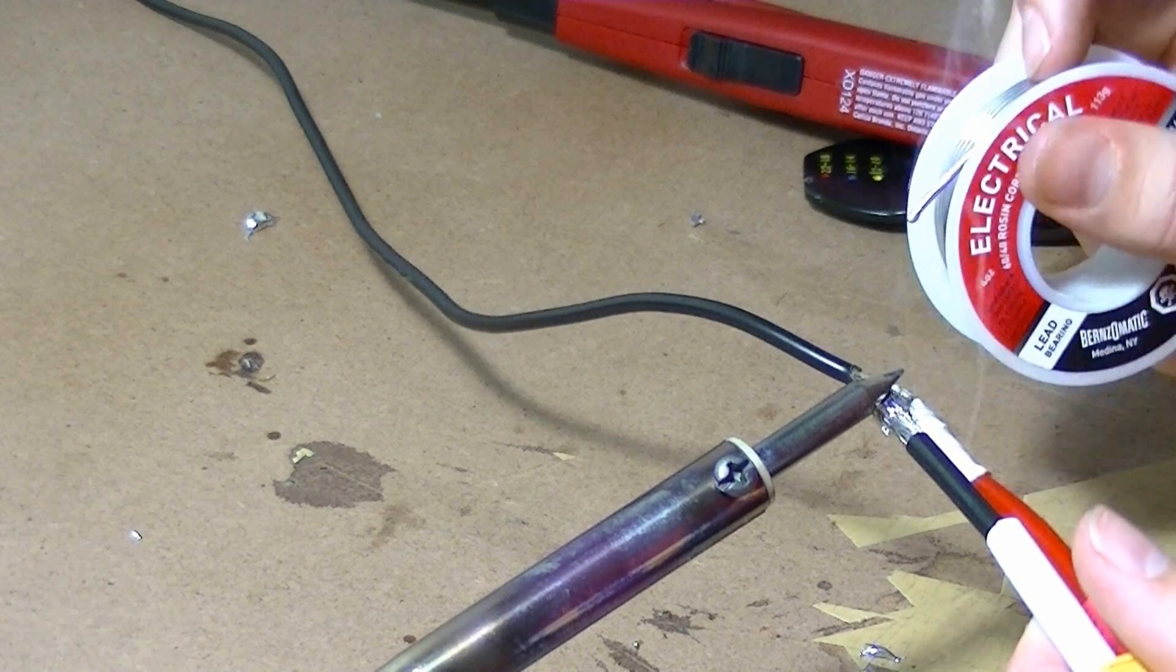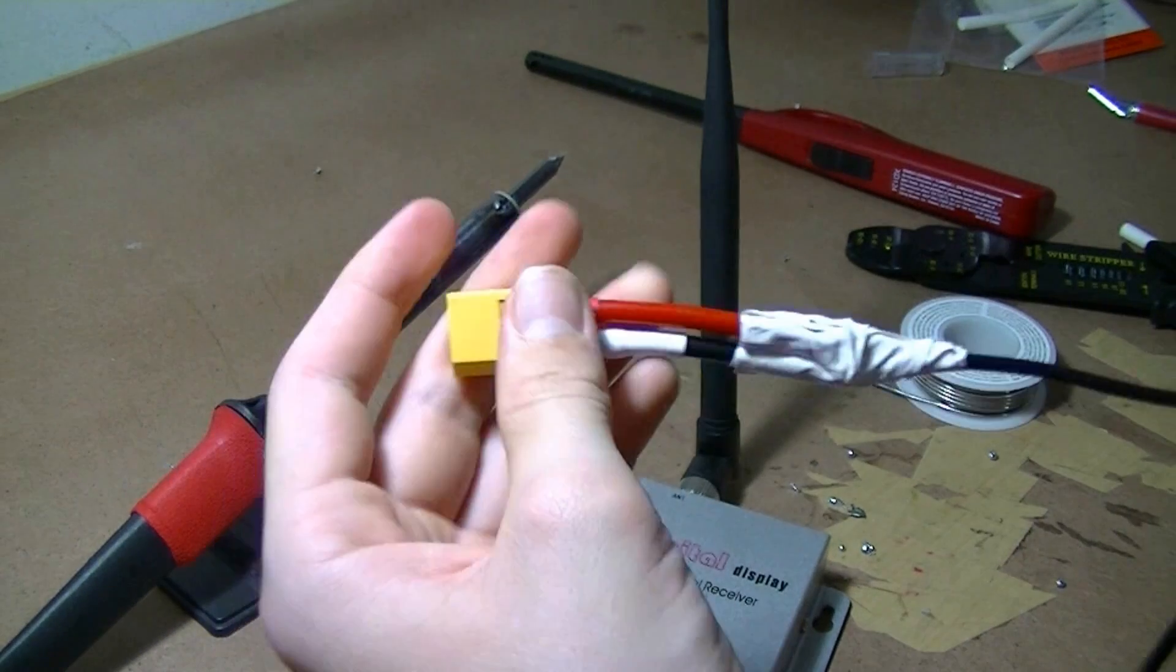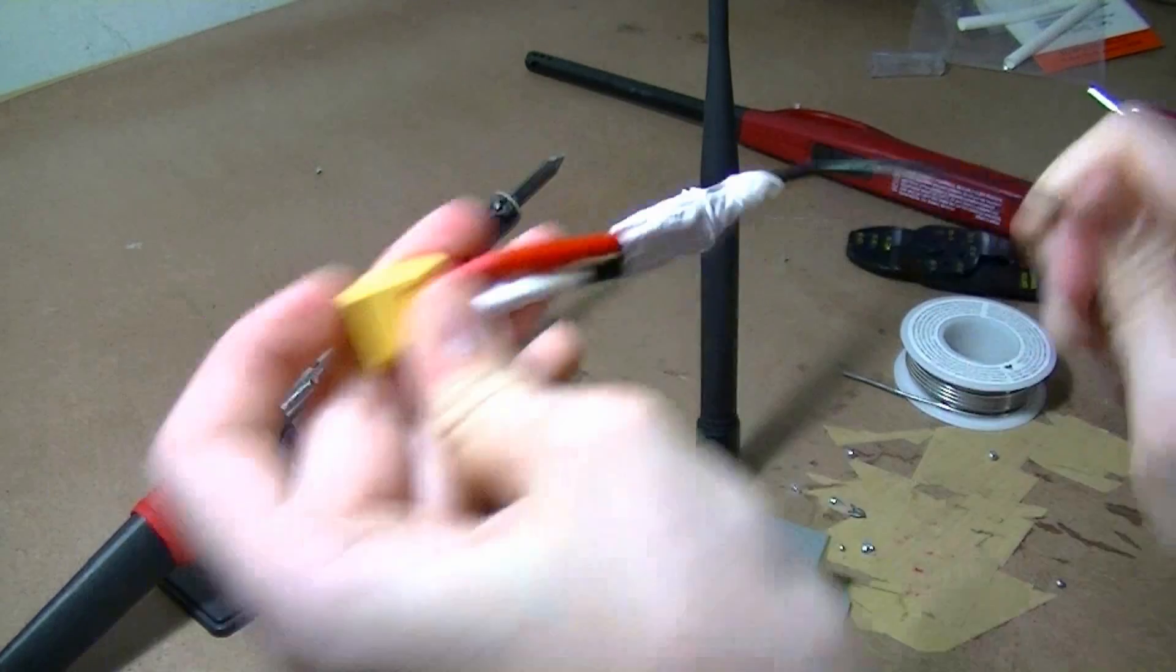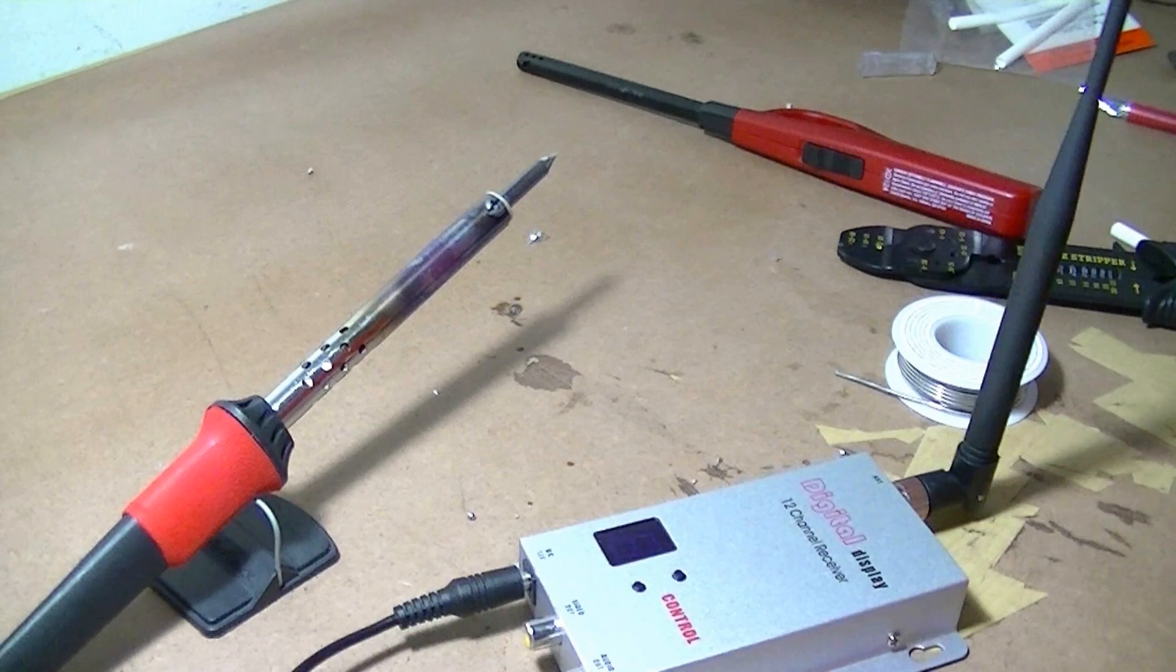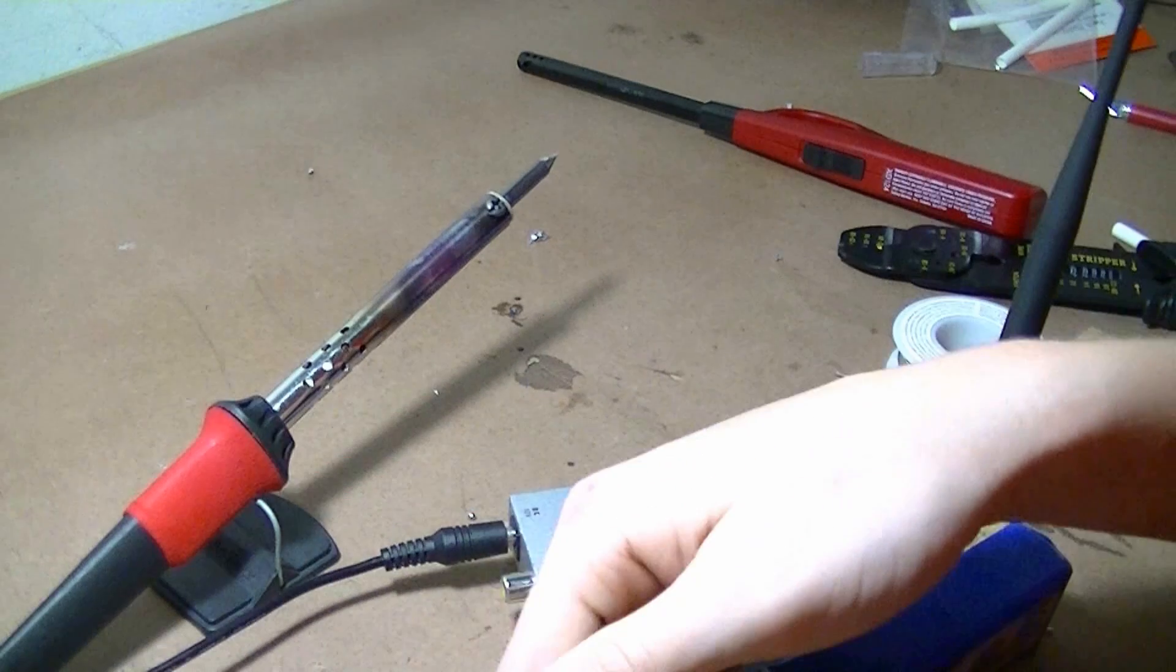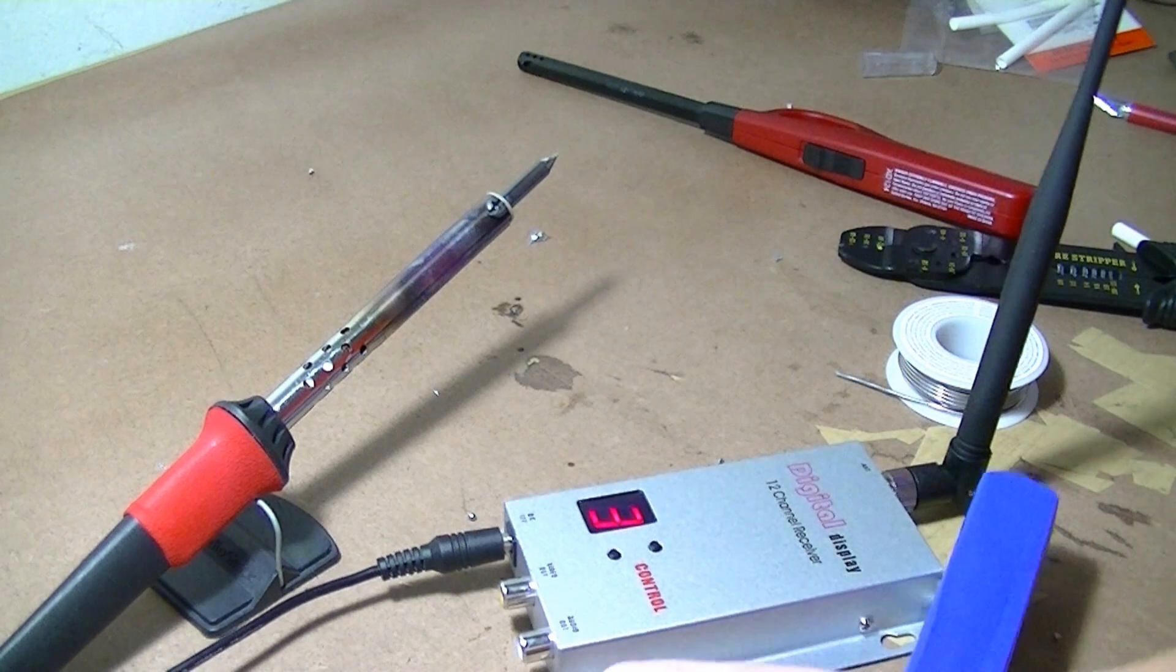Once it's done, it should look like this. You can test it by pulling on it to make sure it's strong and not a cold solder joint. Then plug it in with your three-cell battery and make sure it works.